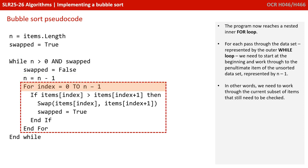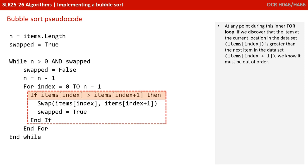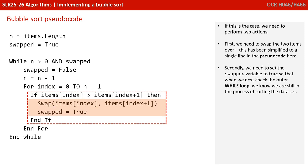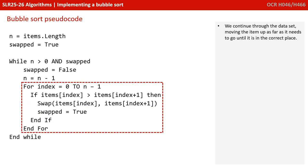The program now reaches a nested inner for loop. For each pass through the data set represented by the outer while loop, we need to start at the beginning and work through to the penultimate item of the unsorted data set, represented by n minus 1. At any point during this inner for loop, if we discover that the item at the current location is greater than the next item in the data set, we know they must be out of order. In this case, we need to perform two actions: swap the two items over, and set the swapped variable to true so that when we next check the outer while loop, we know we're still in the process of sorting the data set. We continue moving items up as far as they need to go until each is in the correct place.